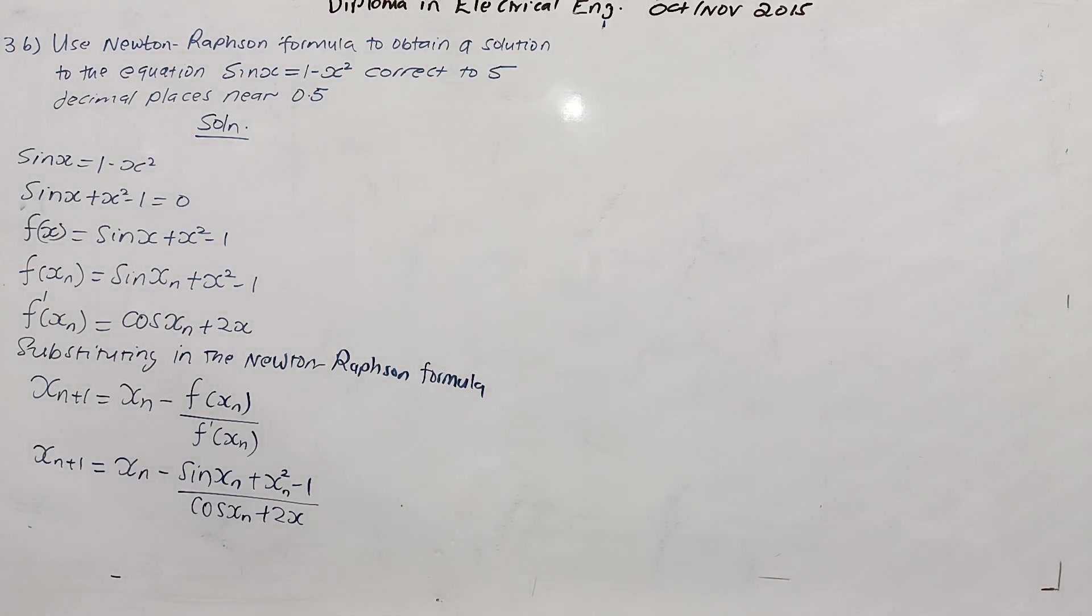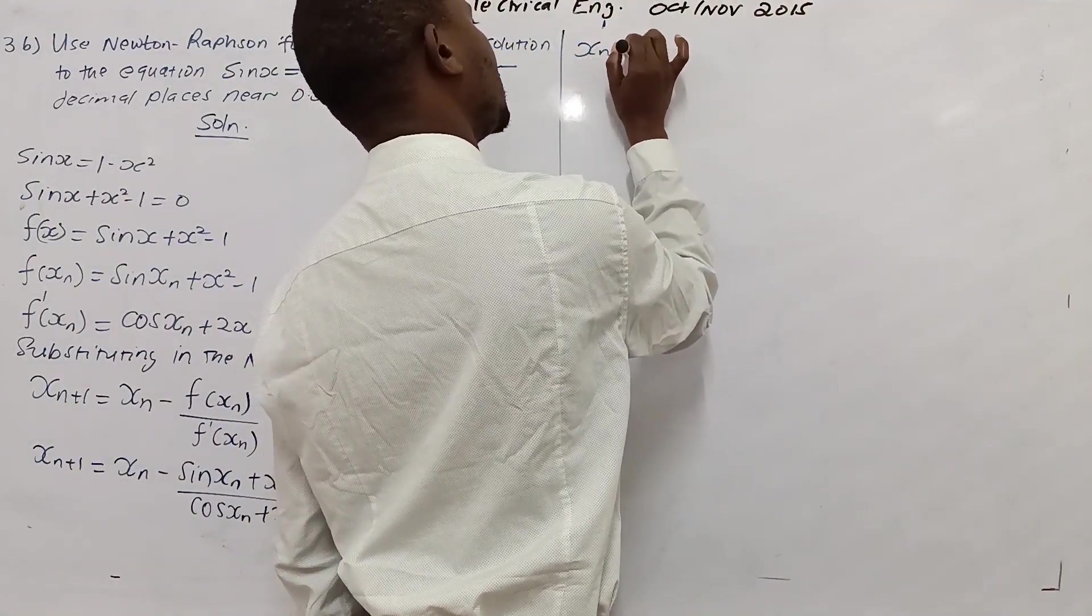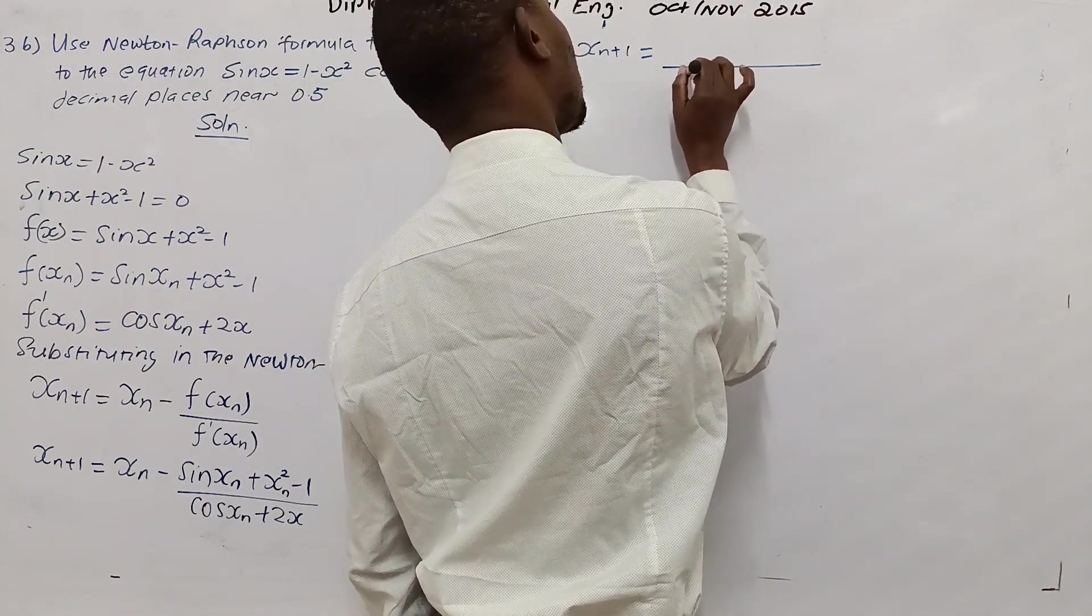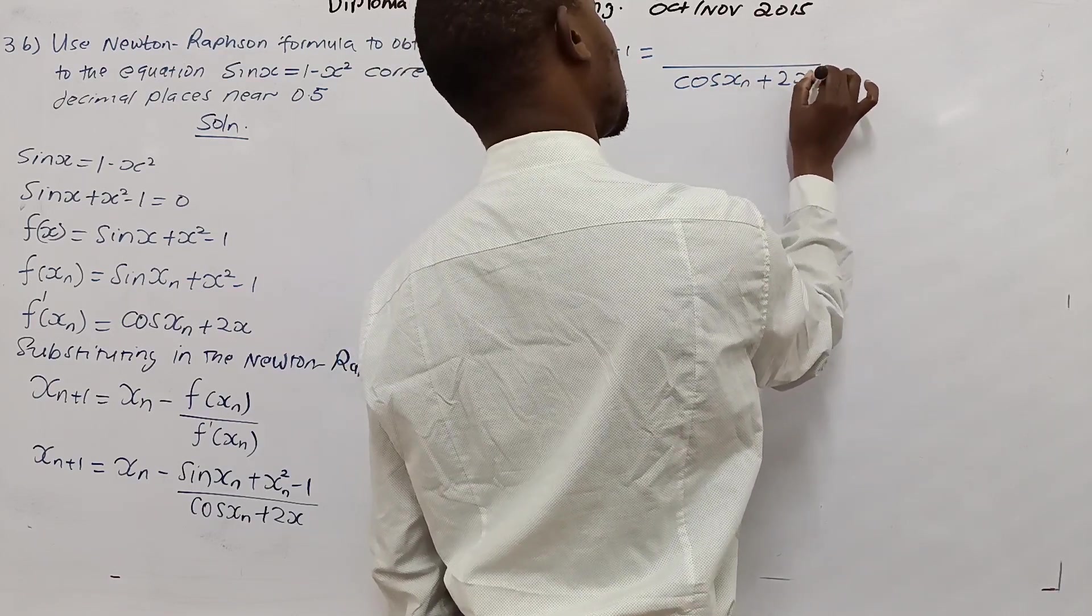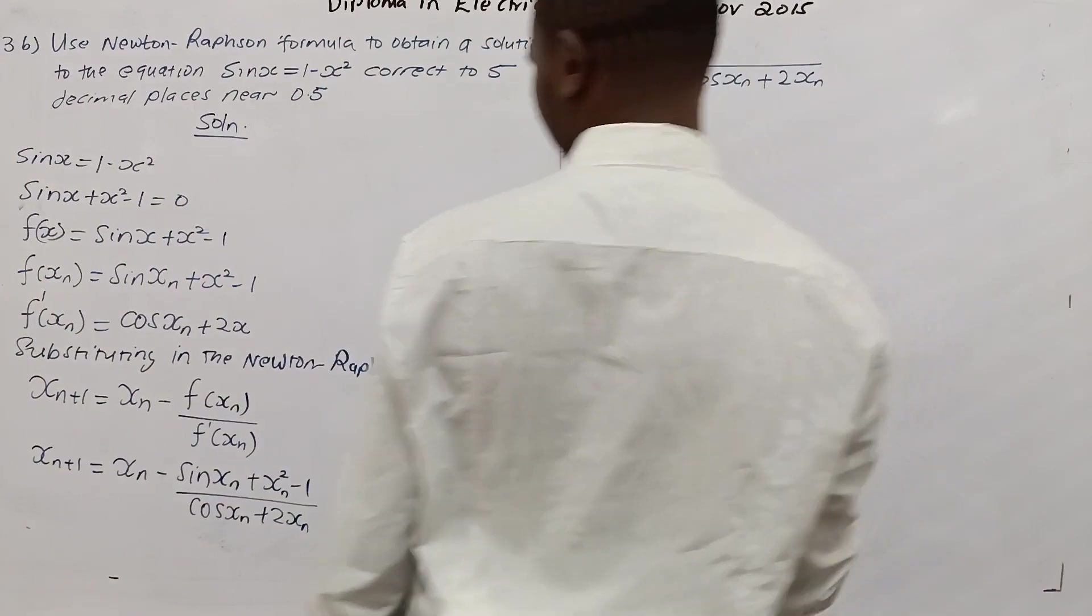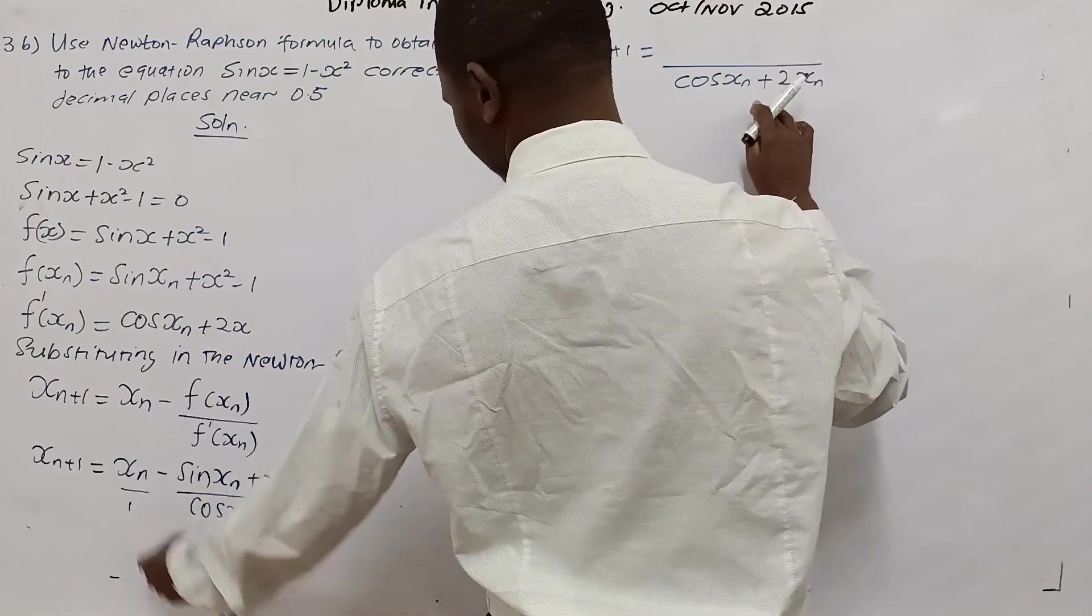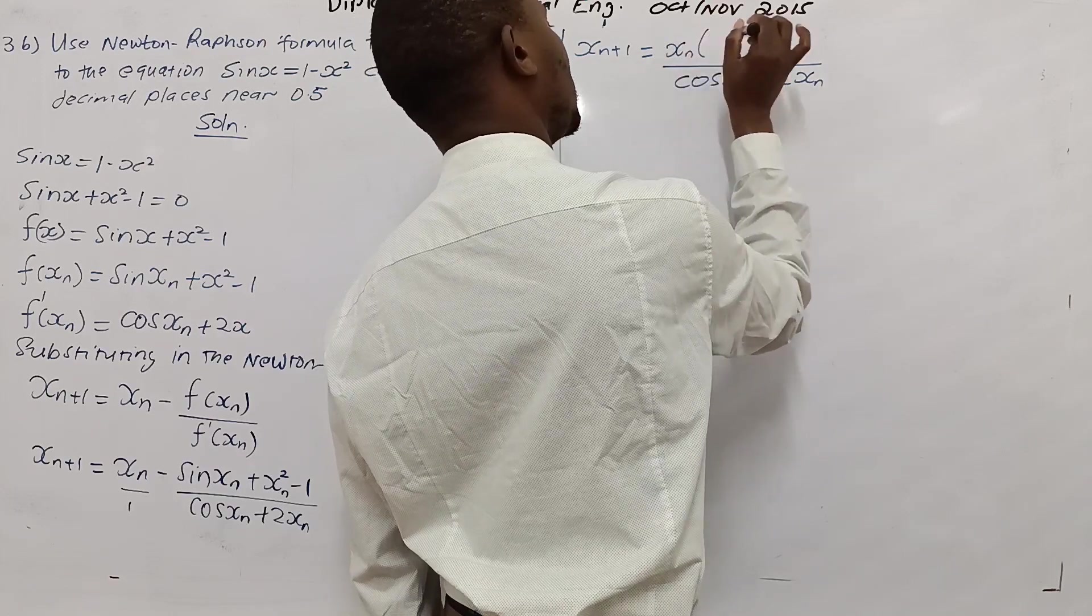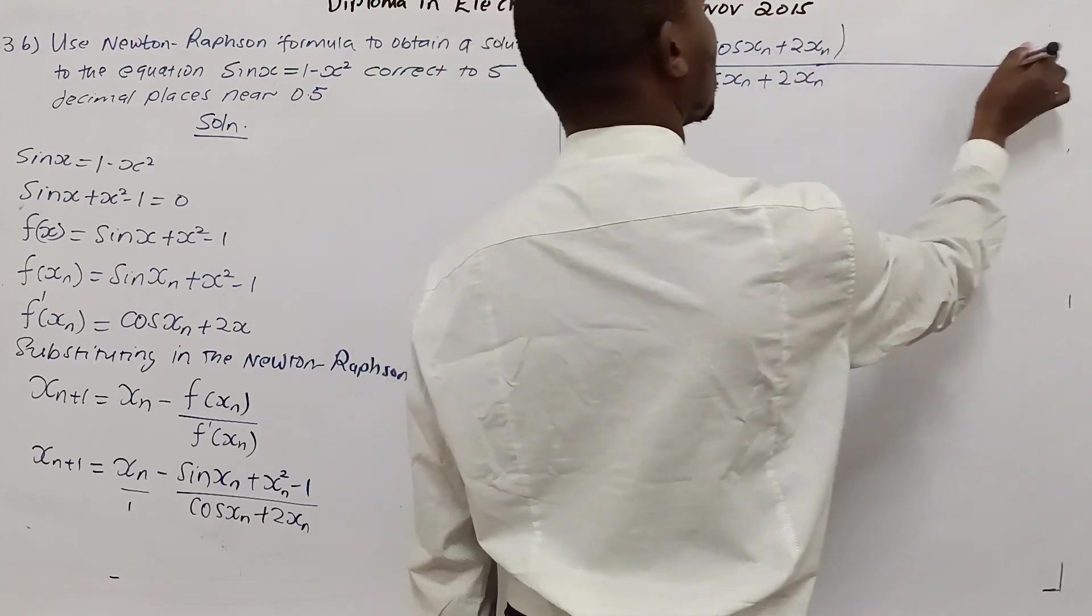If you go about to adjust to what you have been doing earlier, get the LCD. xn plus 1 equals, the LCD is cos xn plus 2xn. I will write this as 2xn. So this one times 1. This is divided by 1. Now this factor times xn, so this is xn here.